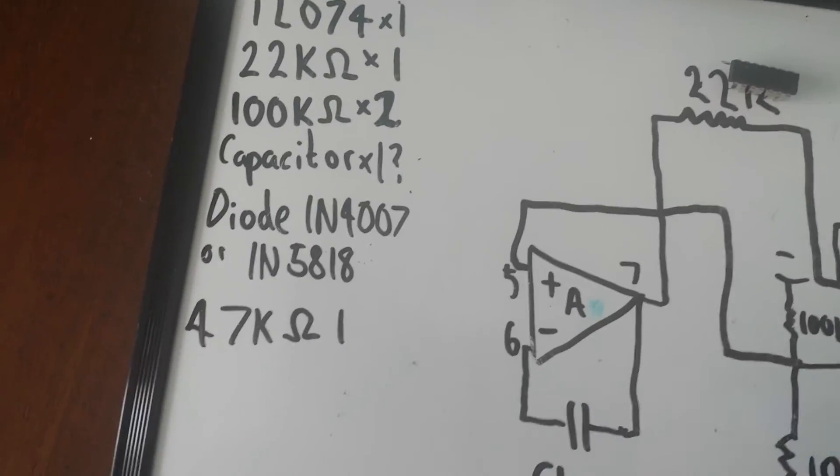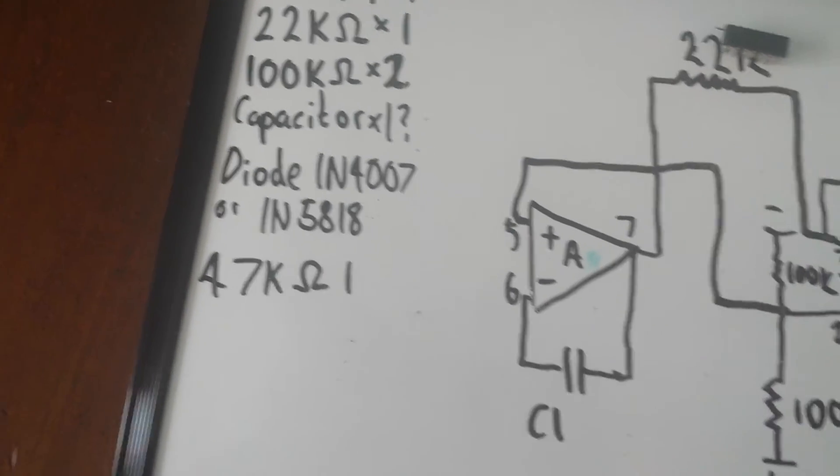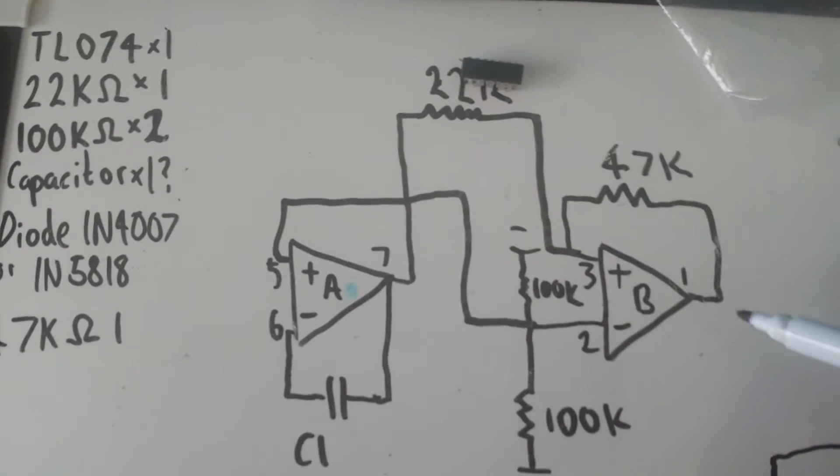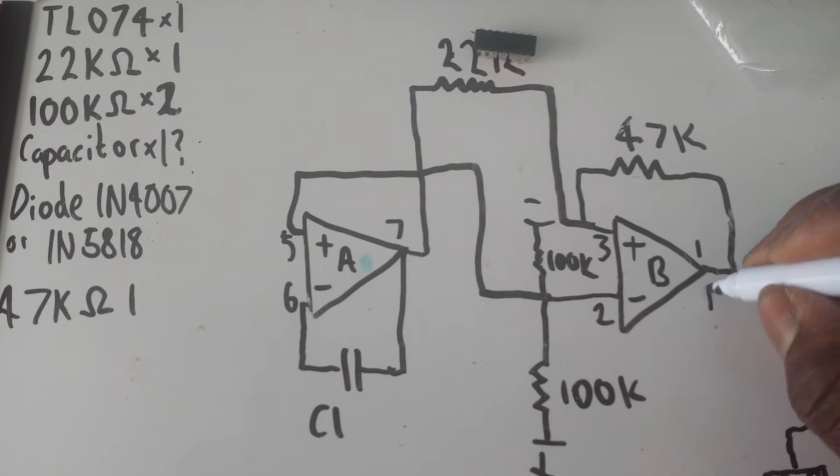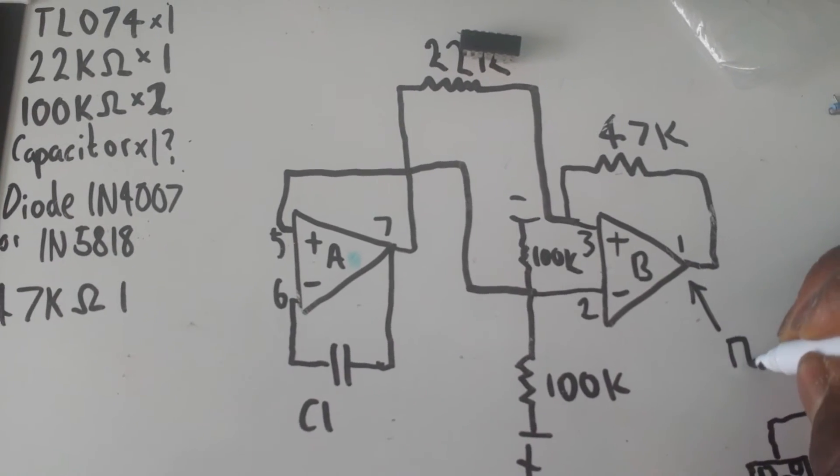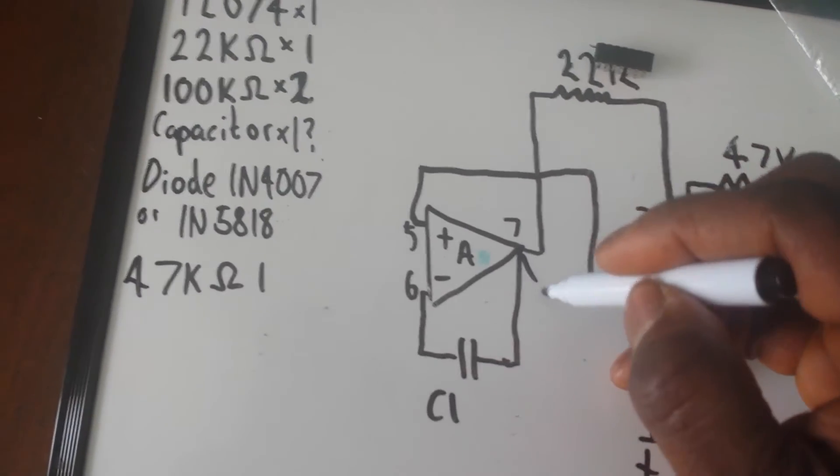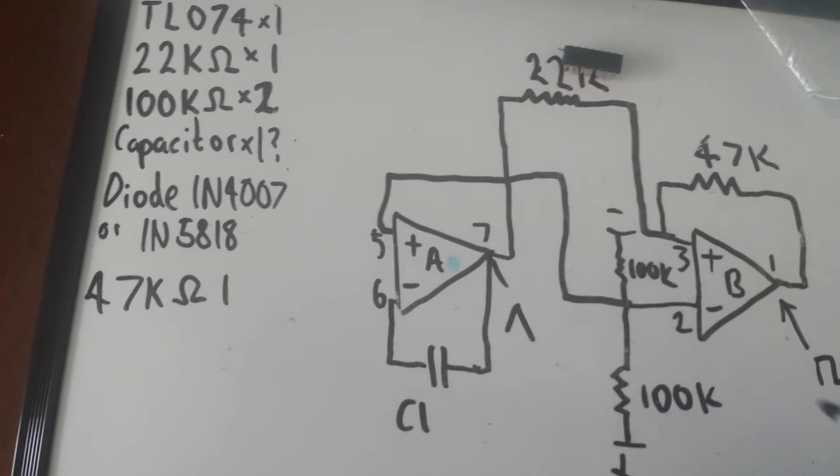At the moment, we actually have a working oscillator. From this point, pin 1, we have a square output or pulse, and from this we have a triangle wave.